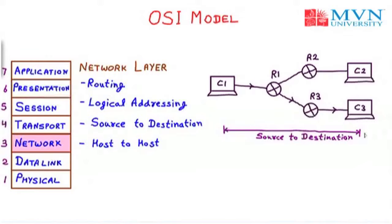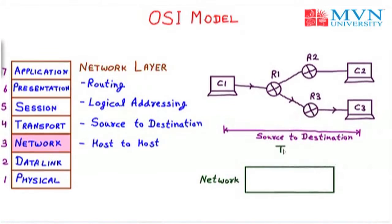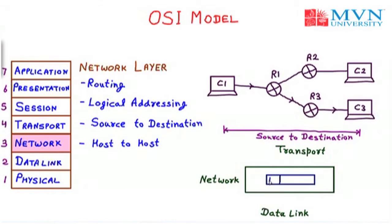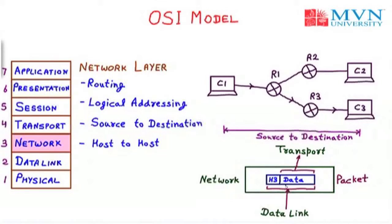To understand the network layer function, let us draw a diagram. This is the network layer — above is the transport layer, below is the data link layer. The data link layer sends data with the header H3 added from the network layer. The transport layer removes the header and takes only the data. This particular combination of header and data at the network layer is called a packet.